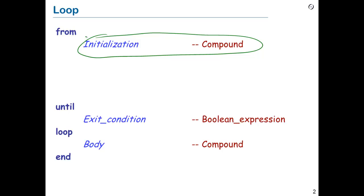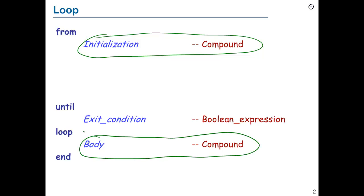A loop is an iteration, and usually before you start iterating, you need to do something to put things in place. What are you going to iterate? We are going to iterate a compound — that's the body, which comes after the keyword loop. And until when are you going to iterate? You will iterate until a certain condition is met: the exit condition.